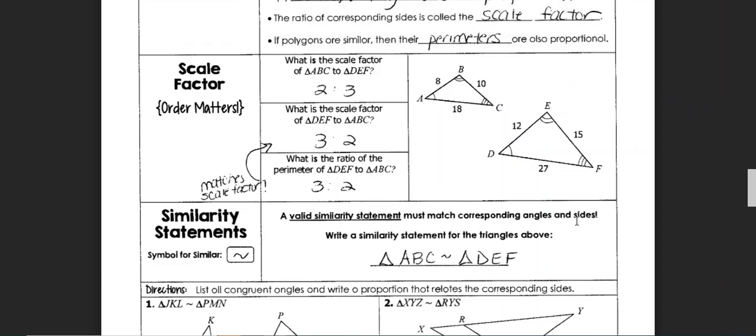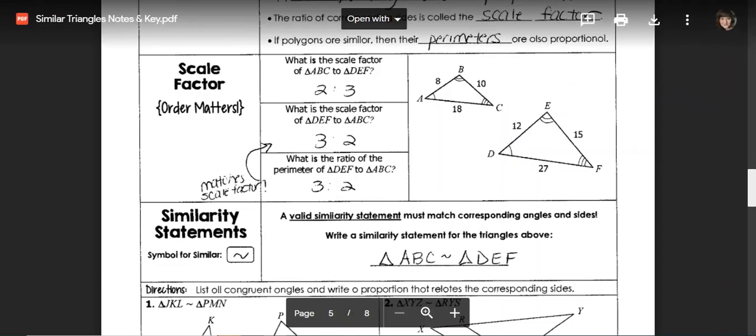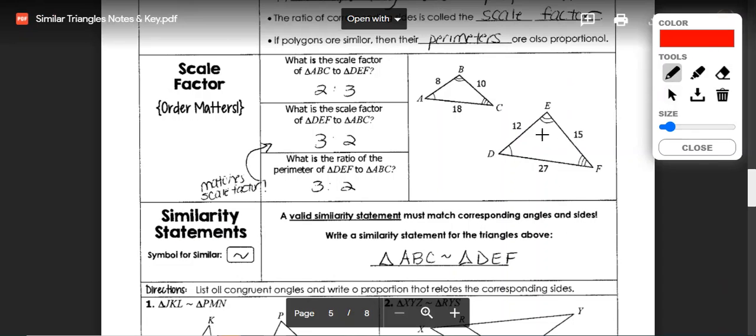Similarity statements are exactly the same as congruency statements with one small change. Instead of using a congruency symbol which has an equal sign as a portion of it, we're just using the top portion and we would say that ABC is similar to DEF.